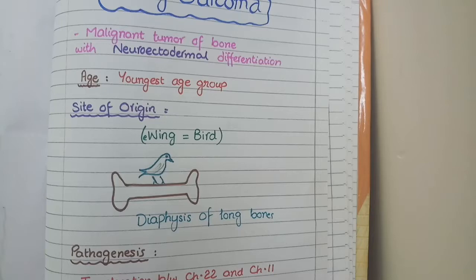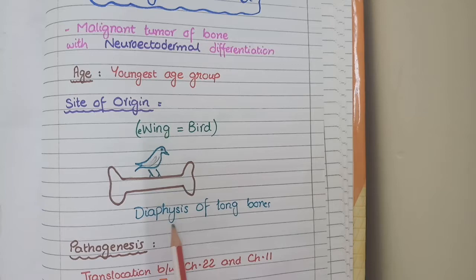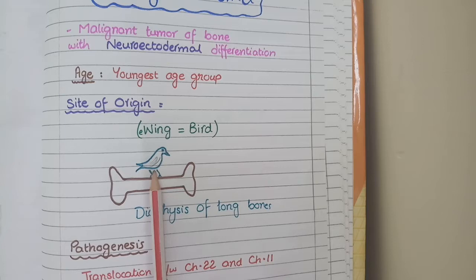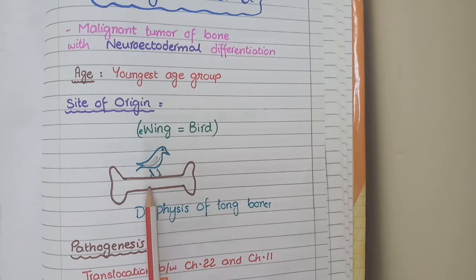Their site of origin is from the diaphysis of long bones — that is, the shaft of the long bones. To remember this, you can use the word 'wing' in Ewing as a hint about birds: imagine a bird sitting on the twig of a tree at the center. Just like that image, Ewing sarcomas are present in the central shaft region of the bone.